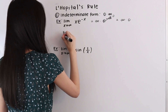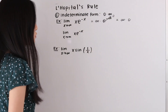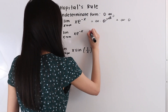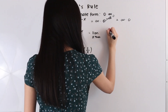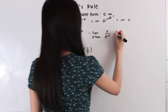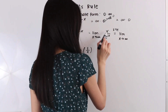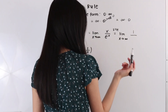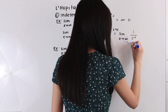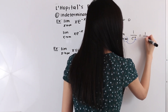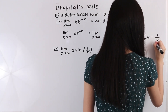We have the limit as x approaches infinity of x·e^(-x). When we have the indeterminate form 0 times infinity, we want to move one of our functions into the denominator. Let's move e^(-x) into the denominator, giving us the limit as x approaches infinity of x over e^x. Applying L'Hôpital's rule, the derivative of x is 1 and the derivative of e^x is e^x. Plugging in infinity gives 1 over e^infinity, which equals 1 over infinity, and any finite number over infinity equals 0. So that is our final answer.